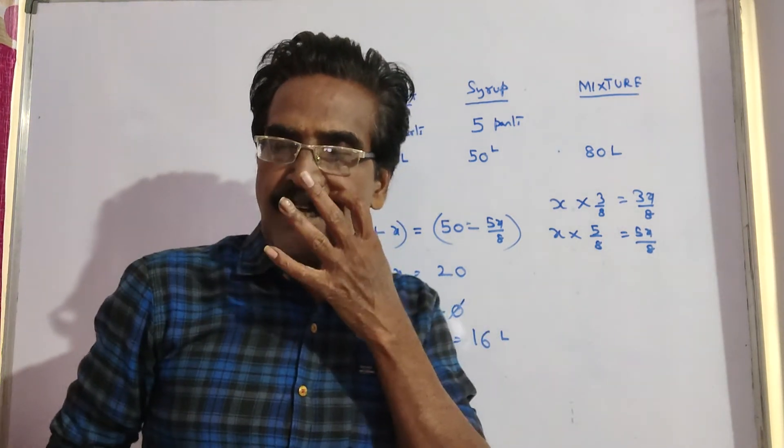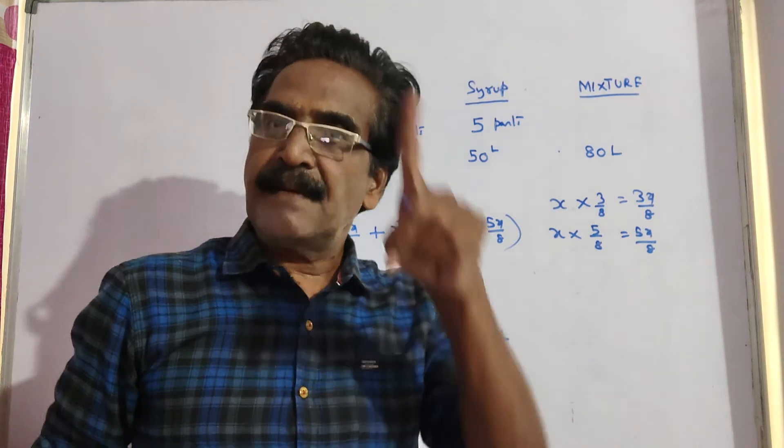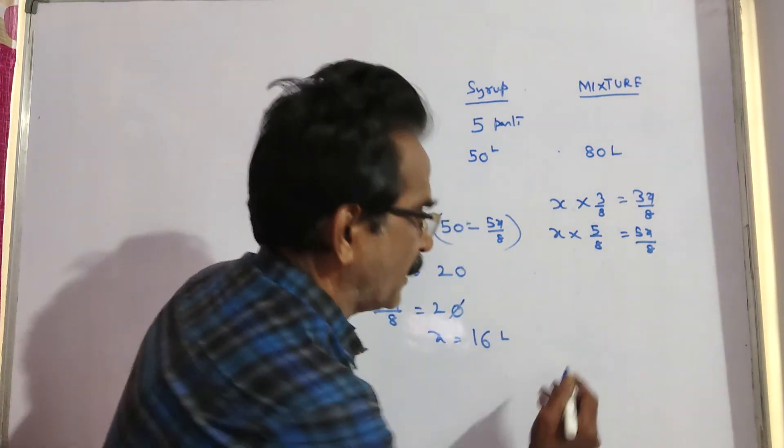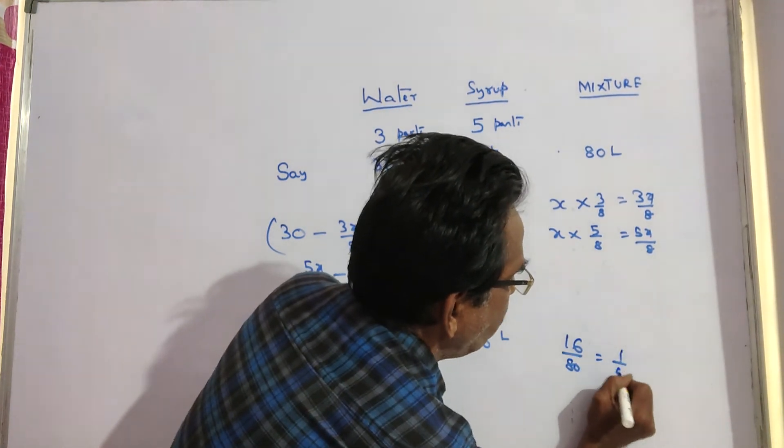So, what part of the mixture is to be drawn off means 16 is what part of 80? 16 by 80 that is 1 5th part.